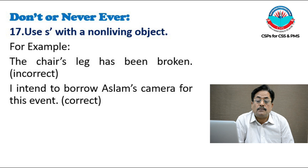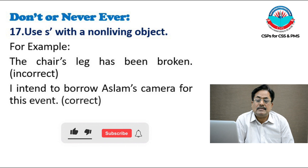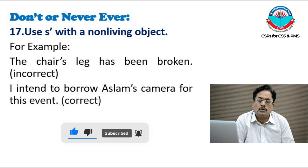Never ever use apostrophe S with a non-living object. We can use apostrophe S with a living person. For example, 'the chair's leg has been broken' is wrong — we should say 'the leg of the chair has been broken.' But we can say 'I intend to borrow Sam's camera for this event.' We had this presentation, and I hope that most of your common confusions are sorted out.